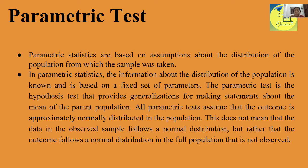The parametric test is the hypothesis test that provides generalizations for making statements about the mean of the parent population. Because we know the distribution of the population, the central tendency used is the mean. For skewed data, the median is better as central tendency because the median is not affected by extreme values. All parametric tests assume that the outcome is approximately normally distributed in the population.